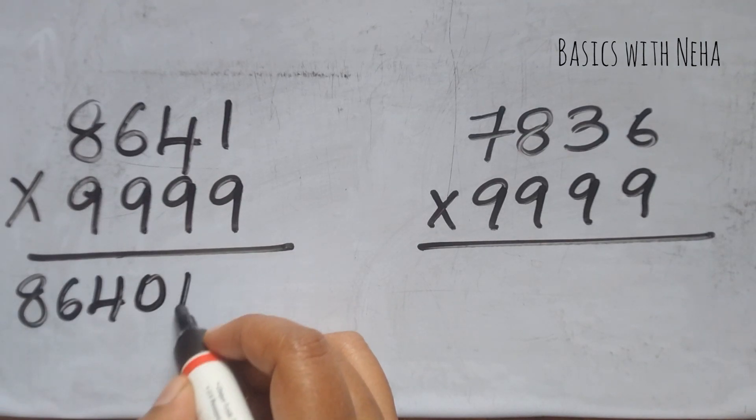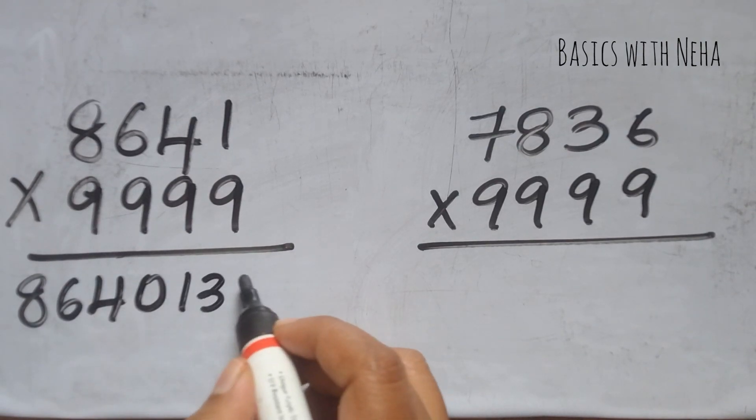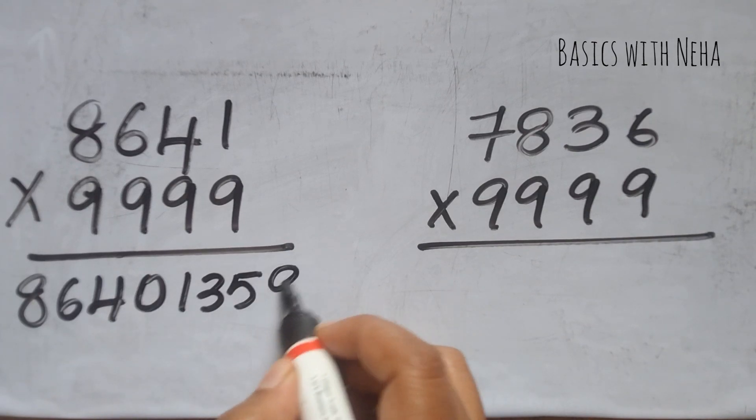9 minus 8 is 1, 9 minus 6 is 3, 9 minus 4 is 5, 9 minus 0 is 9.